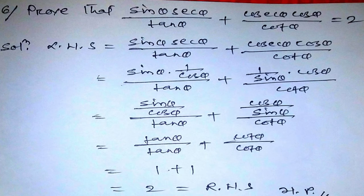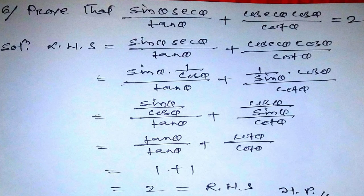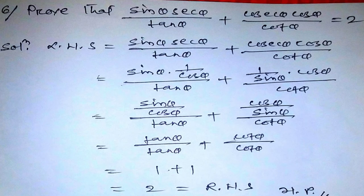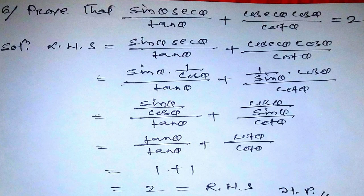Since sinθ/cosθ = tanθ and cosθ/sinθ = cotθ, this becomes tanθ/tanθ + cotθ/cotθ, which equals 1 + 1 = 2, equal to the right hand side. Hence proved.